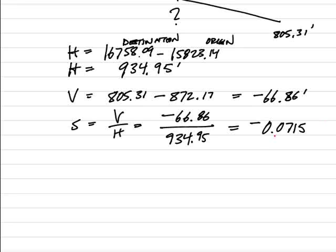You could say this is 0.0715 vertical feet per every horizontal foot, correct? Or we could call it unitless because feet and feet, whether they're vertical or horizontal, are the same unit.